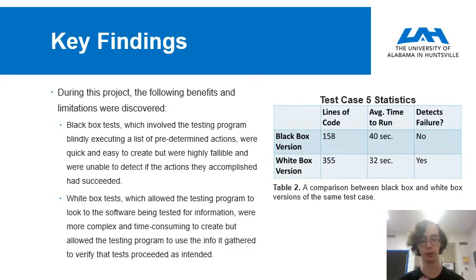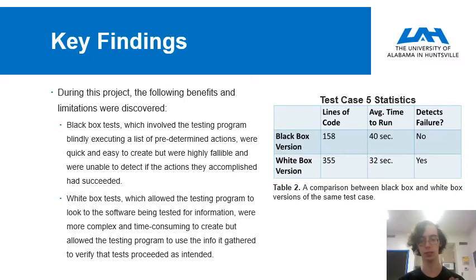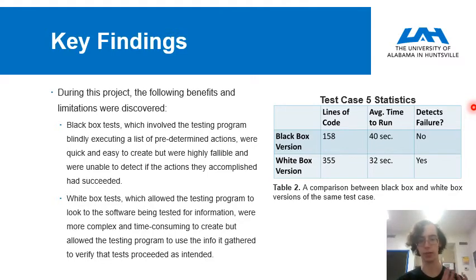To better understand how to implement automated tests effectively, I looked at both black box and white box tests and compared the two to see which might be more worthwhile to create, and discovered the following benefits and limitations. Black box tests, which involved the testing program blindly executing a list of predetermined actions, were very quick and easy to create, but they were also highly fallible and unable to detect if the actions they had accomplished had actually succeeded. For example, if a black box test instructed the testing program to click in an area occupied by a text box and then type some text, we would expect the text box to display that text — however, a black box test would be unable to verify that was actually the case.